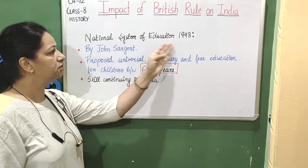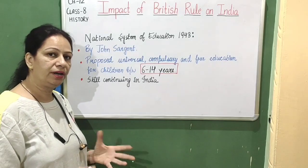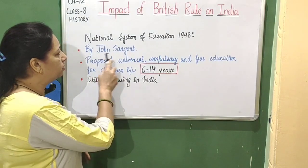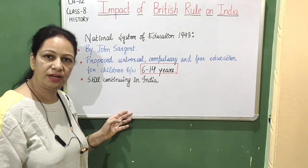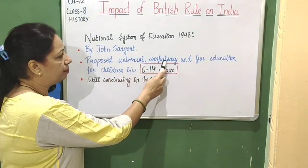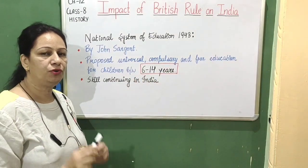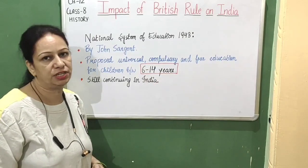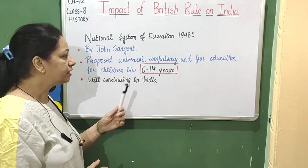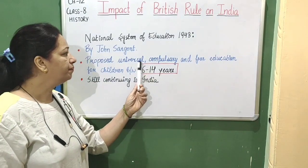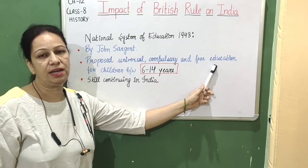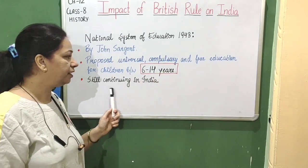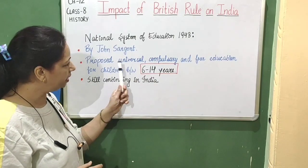The next topic is the National System of Education of 1943. In 1943, a new education system was introduced by John Sargent, a British official. It proposed universal, compulsory, and free education for children between 6 to 14 years of age. This system is still continuing today.